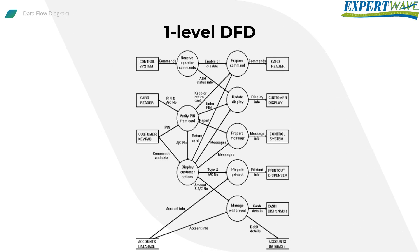In one level DFD, the context diagram is decomposed into multiple bubbles or processes. At this level, we highlight the system's main functions and break down the high level process of zero level DFD into sub-processes. Input data is received from the hardware elements on the left, various types of data are processed by different parts of the software system, and output data is sent to the elements on the right. Processes include: Receive operator commands, Prepare commands, Update display, Verify PIN, Prepare message, Display customer options, Prepare printout, and Manage withdrawal.